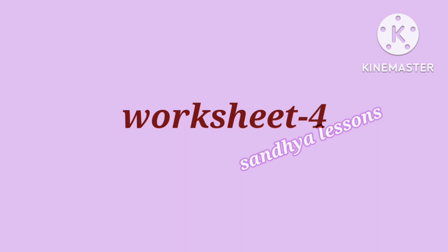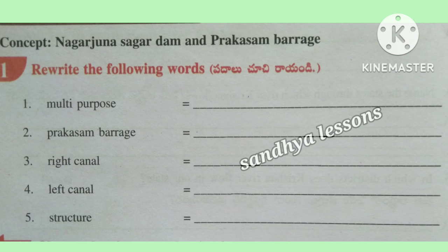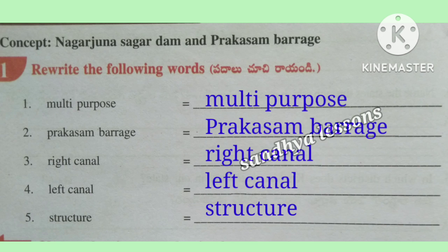Worksheet 4. First, rewrite the following words: Multipurpose, Prakasambaraj, Right Canal, Left Canal, Structure.